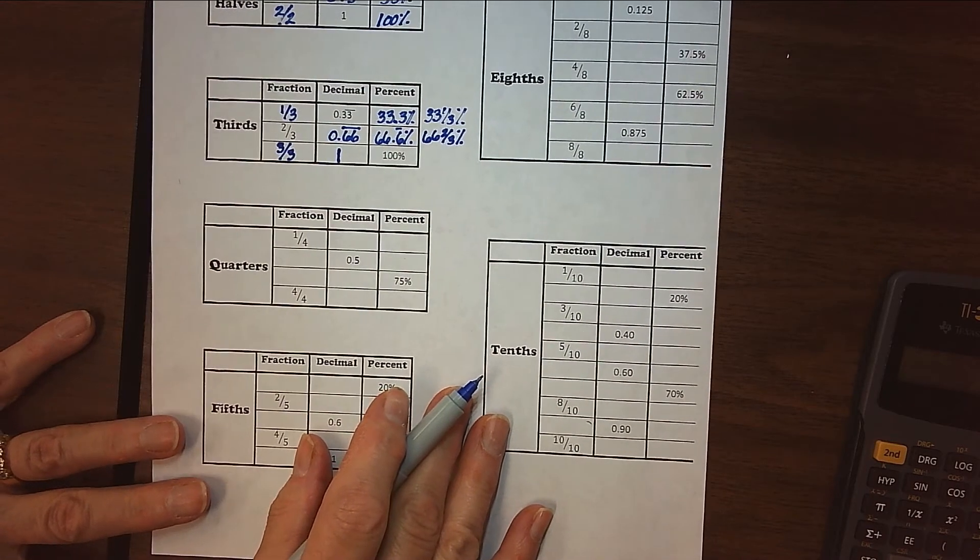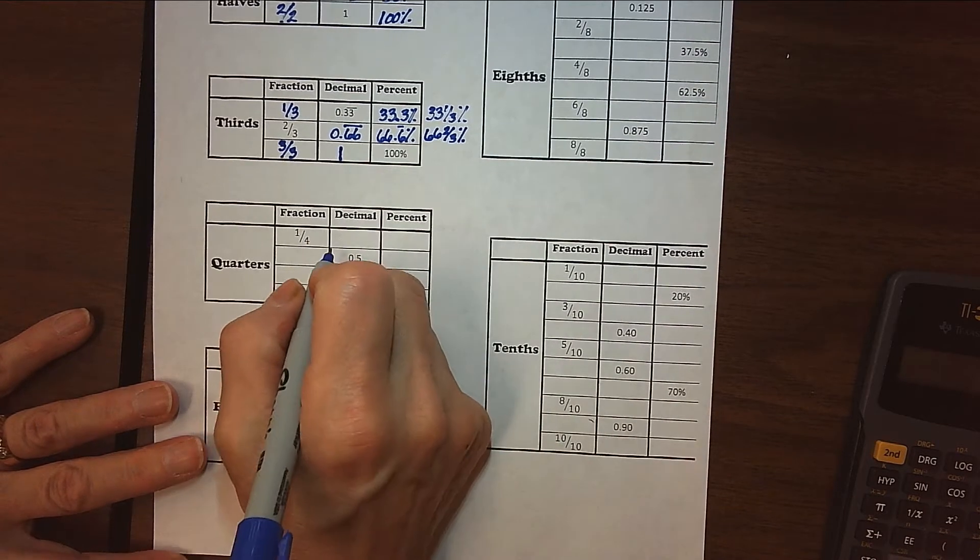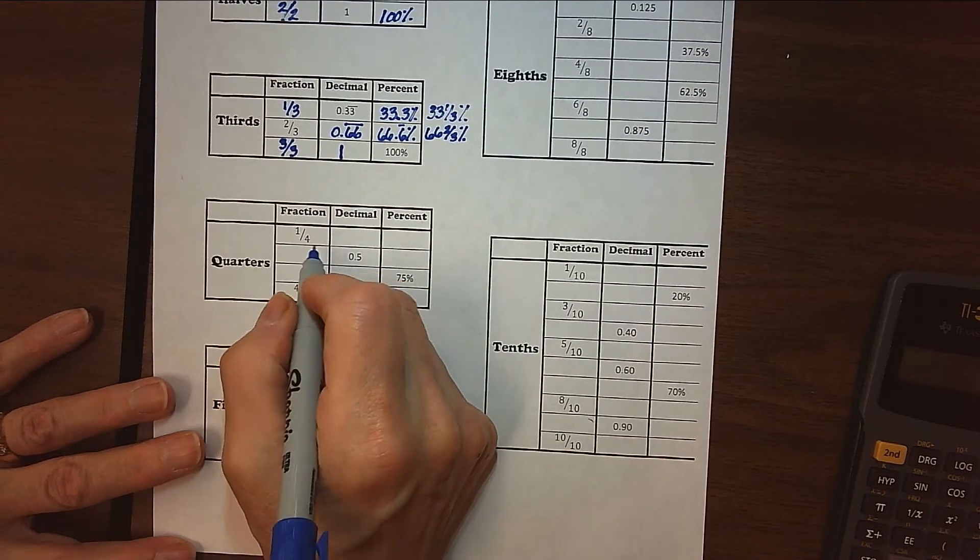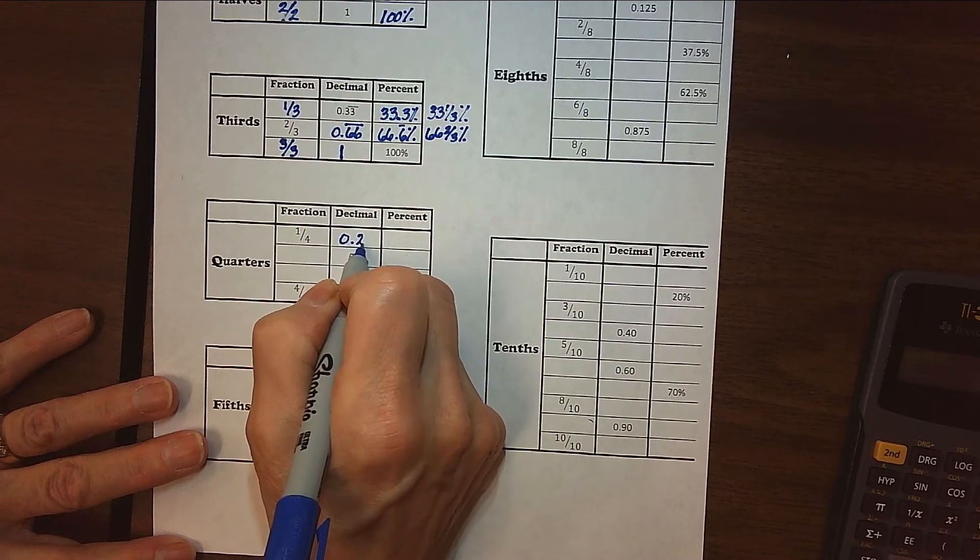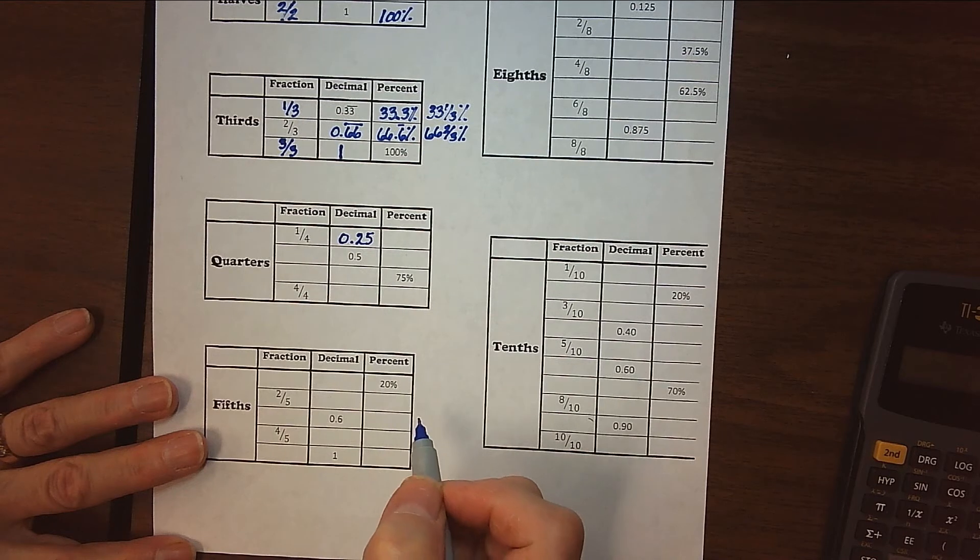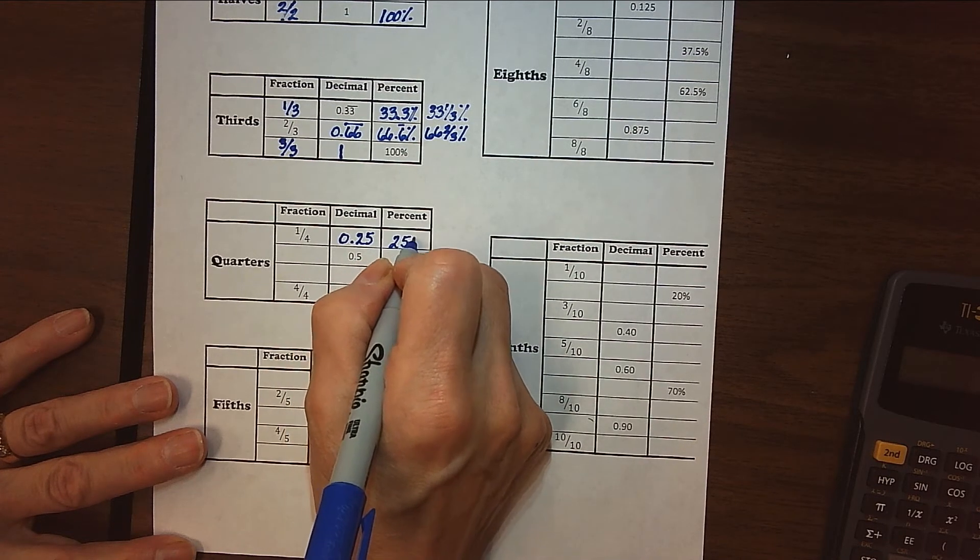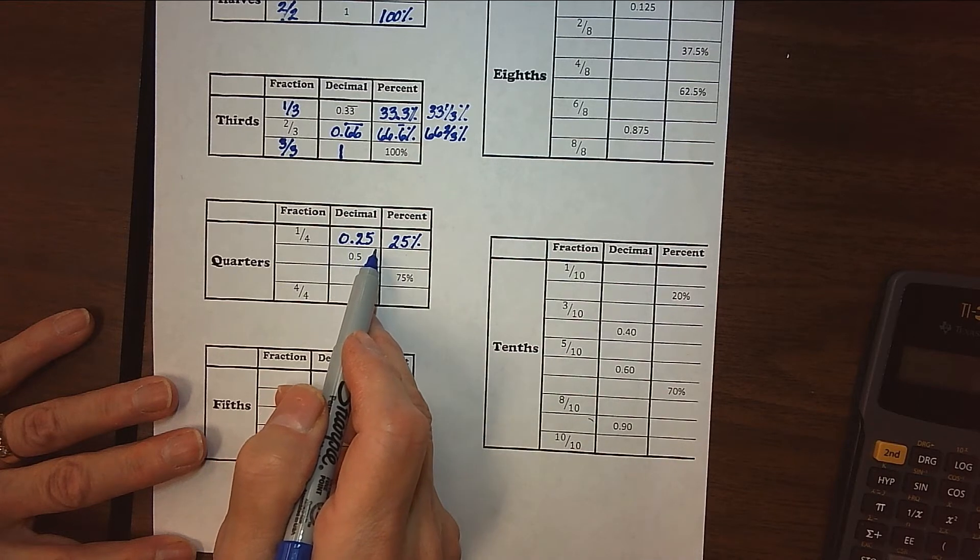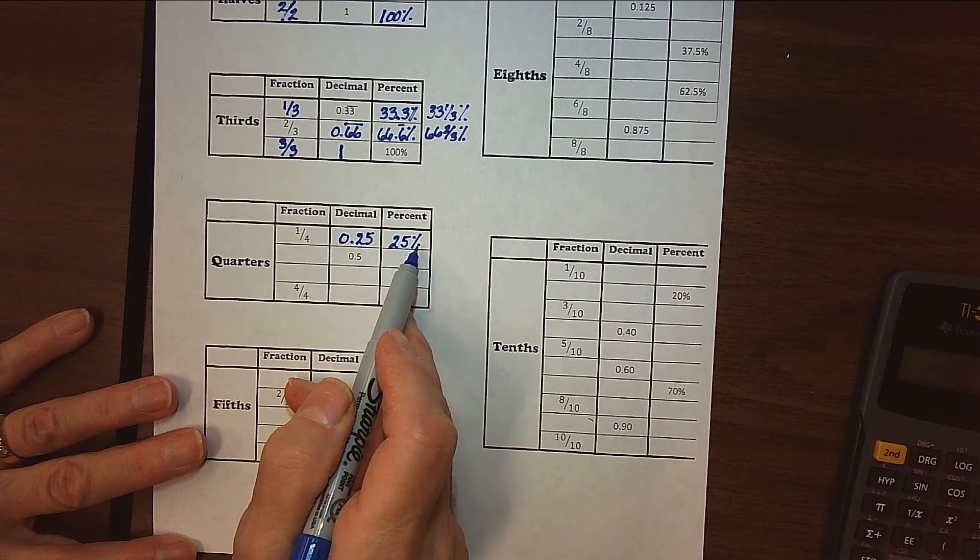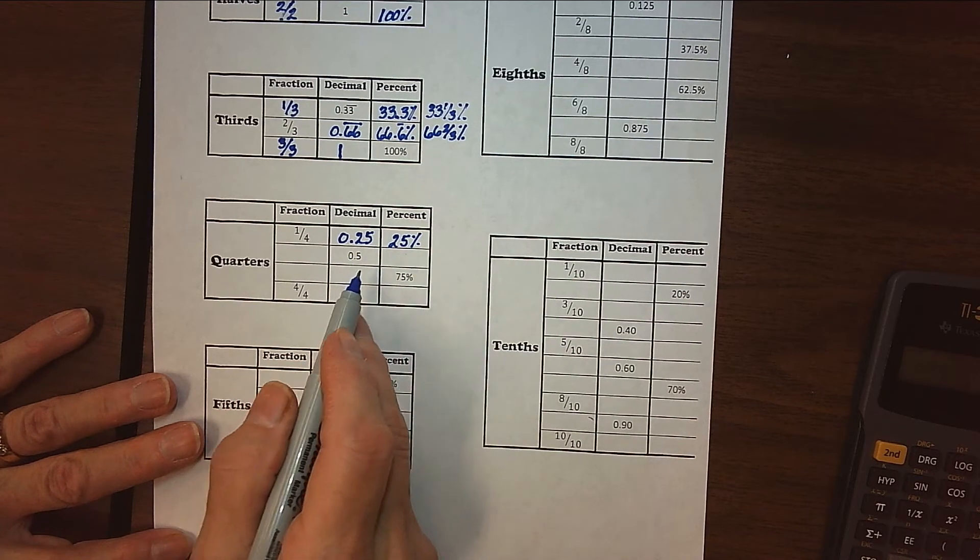Alright, so the fourths you may know because those are fairly common. And so one-fourth, just like one-fourth of a dollar, is a quarter. So one-fourth is 0.25. And again, that's 25%. Notice that we just moved that decimal point over two places to get from our decimal to our percent. Once we have the decimal, the percent is very, very easy.